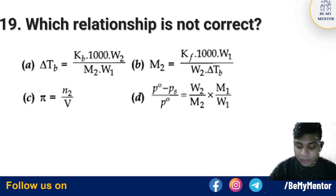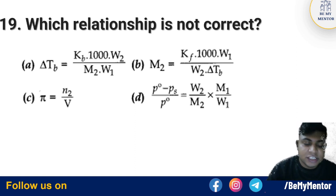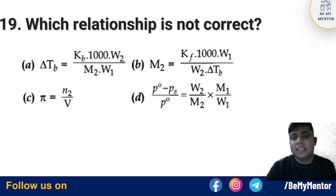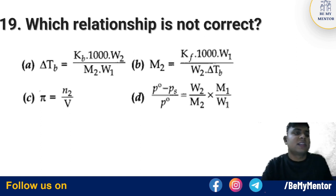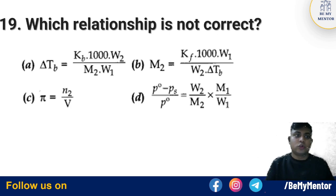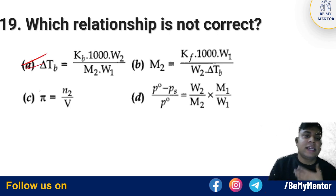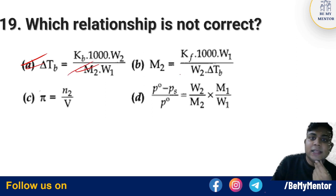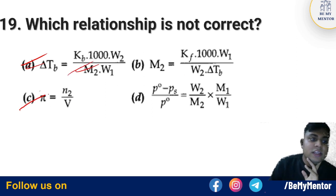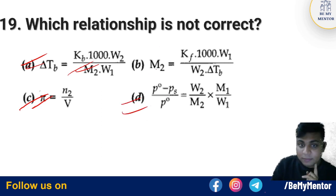Question number 19: Which relationship is not correct? The formula delta Tb equals Kb times molality is correct. Pi equals n divided by V times RT is also correct. Option number B is identified as the correct answer for the incorrect relationship.